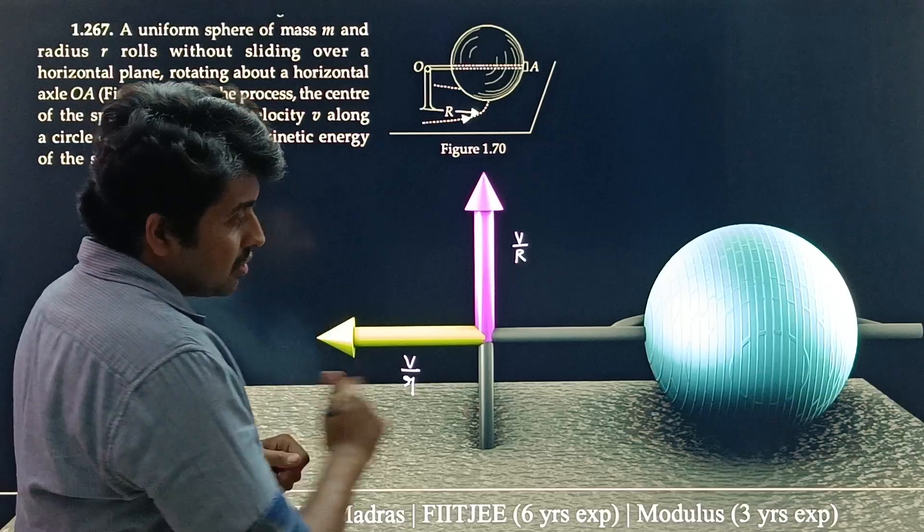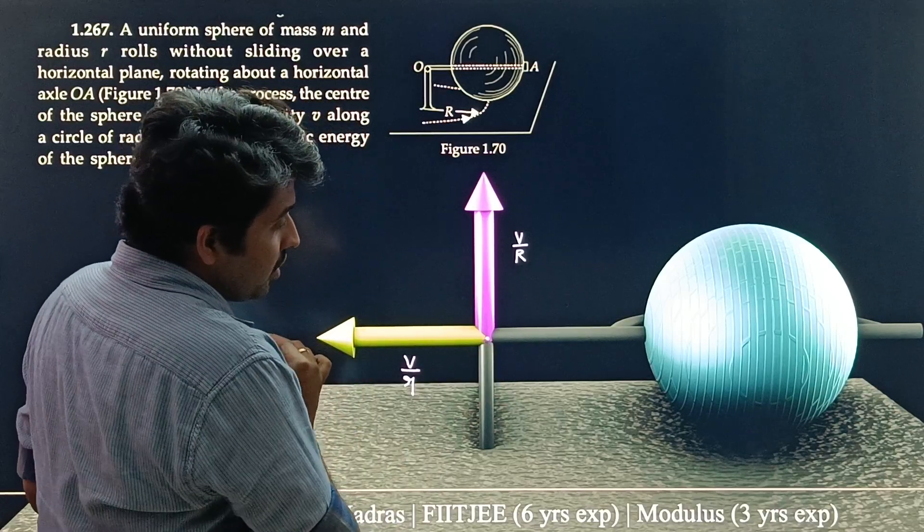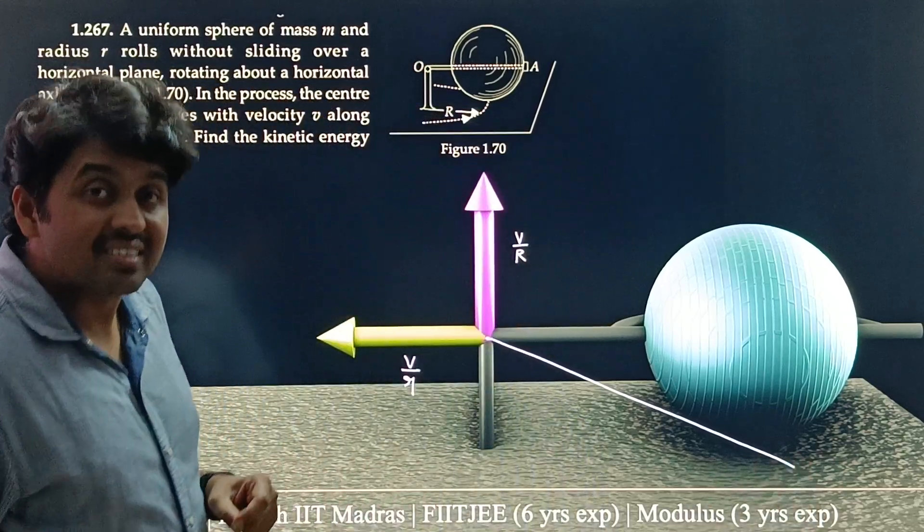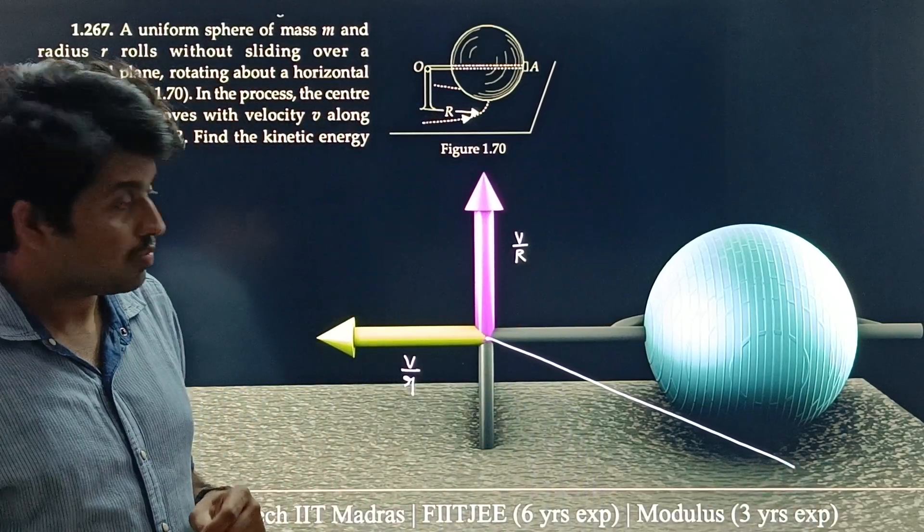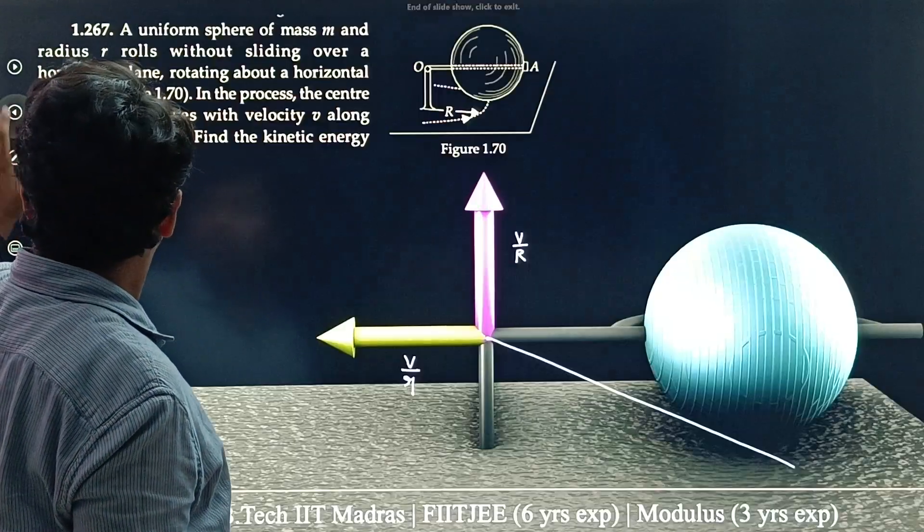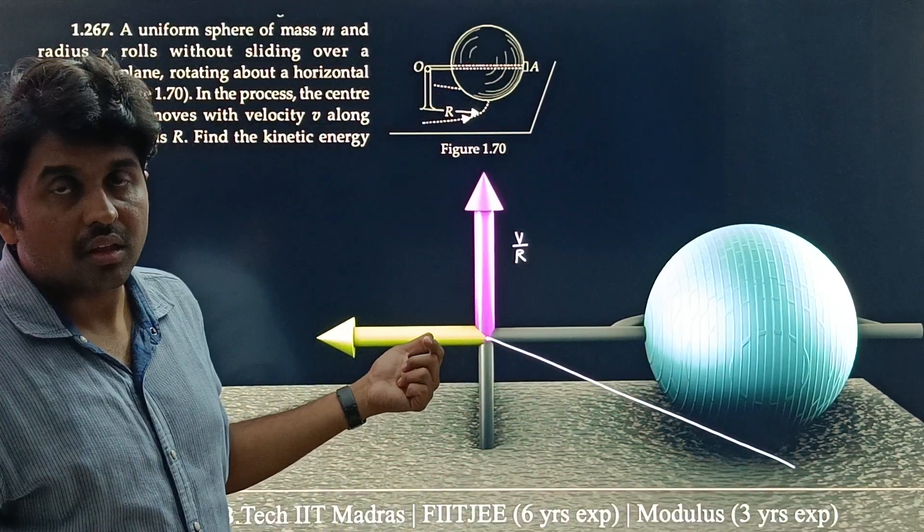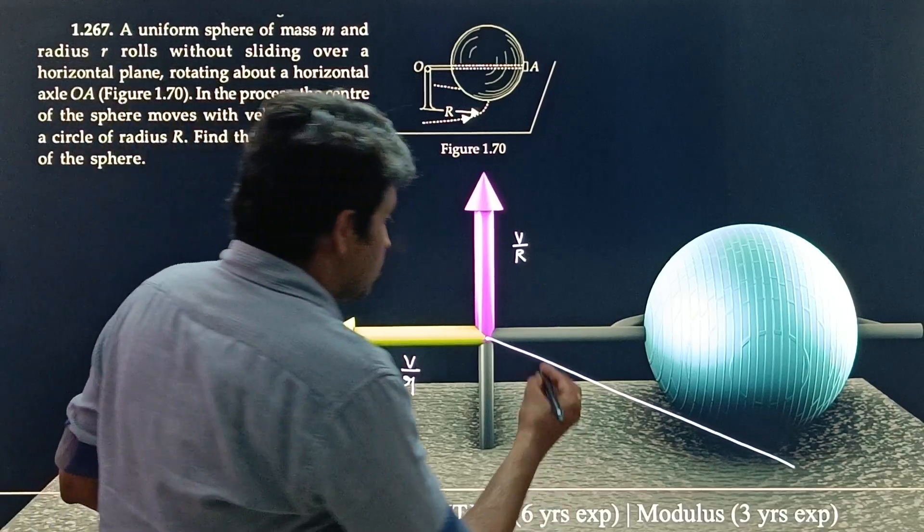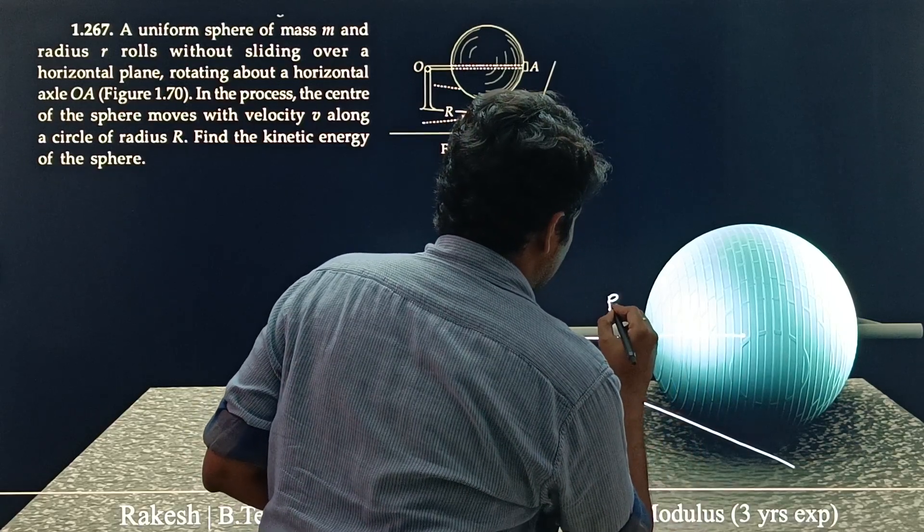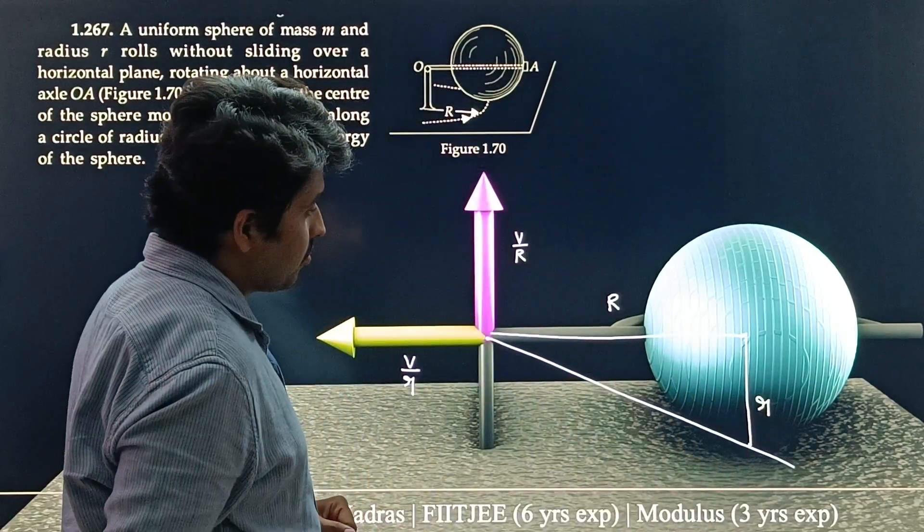See, we know that this point of the sphere is at rest, right? And this point is also at rest. So what we can say is that this would be the instantaneous axis of rotation. What we can write is moment of inertia about this axis times the net omega square will be the total kinetic energy.